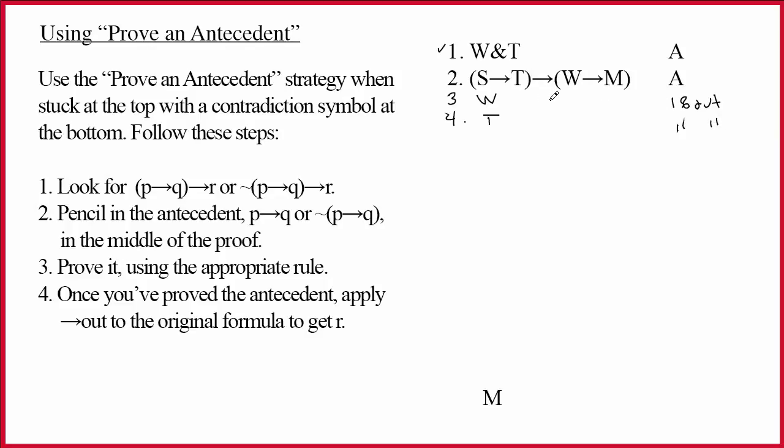Line two. Arrow is the main connective. If I had S arrow T on another line, then I could do arrow out, but I clearly don't. This line two is actually going to be the star of this proof. You can tell that at some point we would like to do arrow out. And so really what this process is going to be about is setting up the ability to do arrow out on line two.